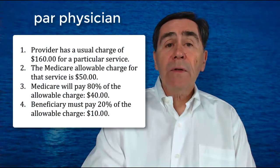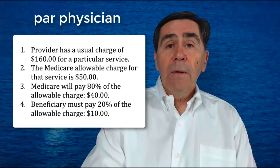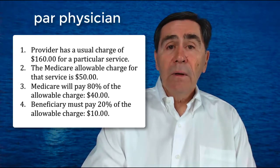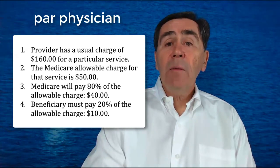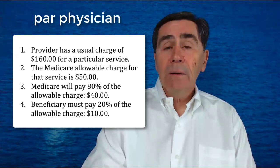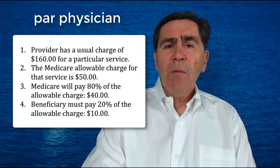Let's go through a couple of examples. We'll repeat the one we just went through and add a couple more. Assuming we're a participating physician: the provider has a usual charge of $160 for a particular service. The Medicare allowable charge for that service is $50. Medicare will pay 80% of the allowable charge — $40. The beneficiary must pay 20% of the allowable charge, or $10.